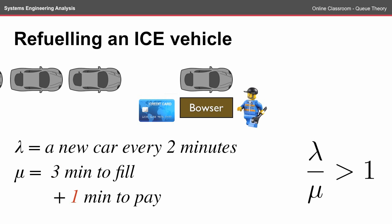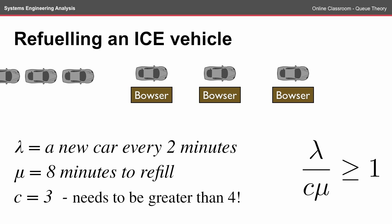They could employ a service person to help with refilling and payment, bringing the total service time down to 4. To service a queue where a new car is arriving every 2 minutes is very difficult for a service station. Not surprisingly, this is why they have multiple Bowsers. Assuming the same arrival rate and the original service rate, looking at 3 Bowsers, in a multi-channel system,